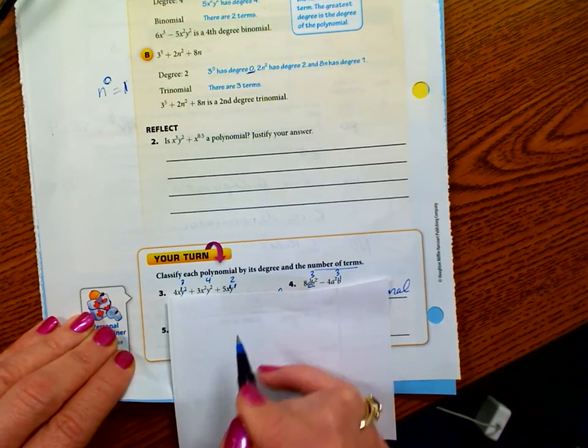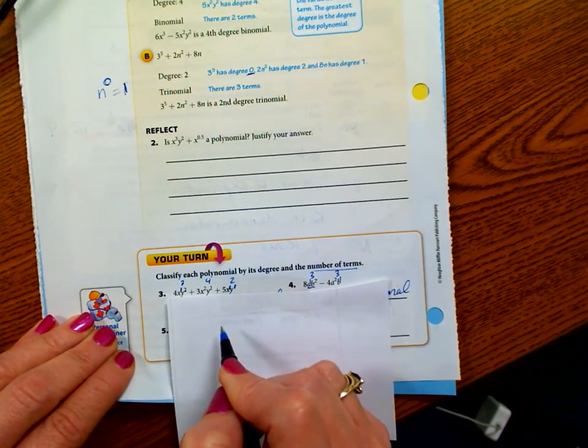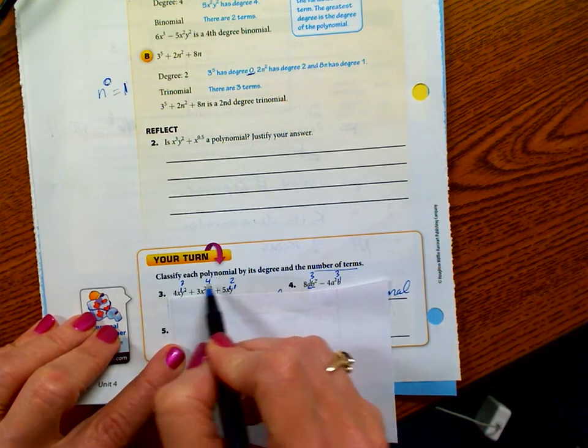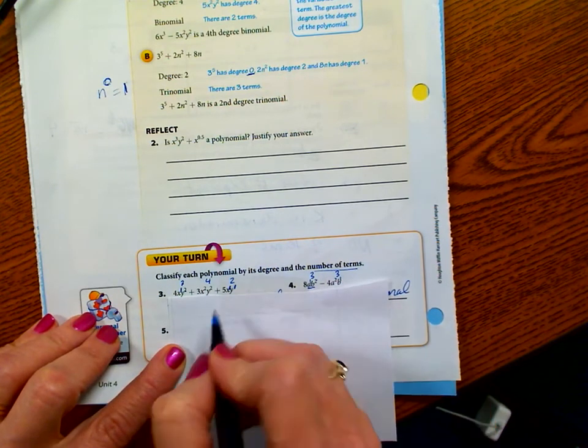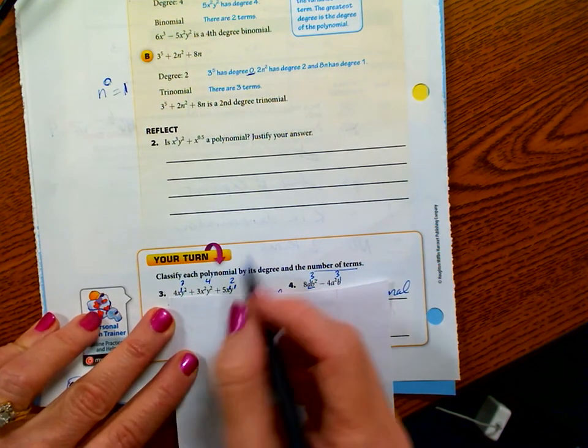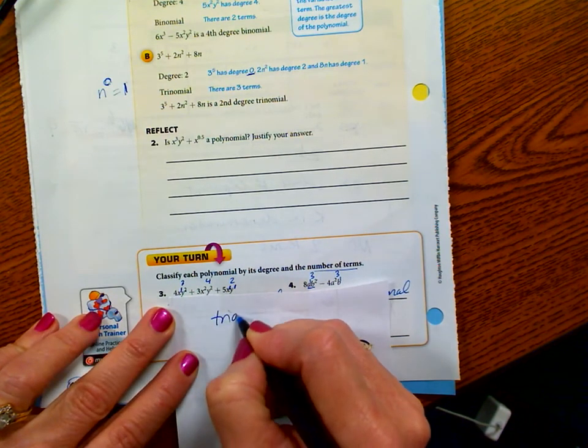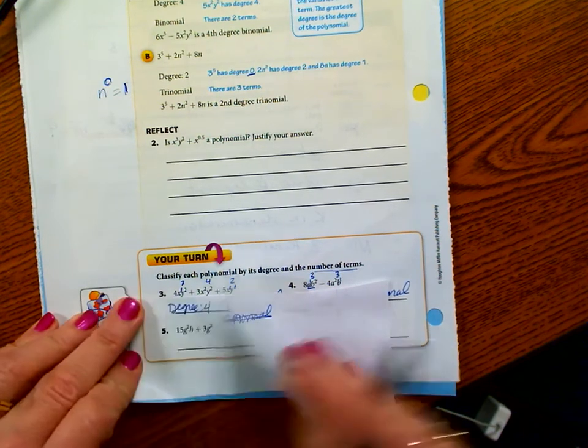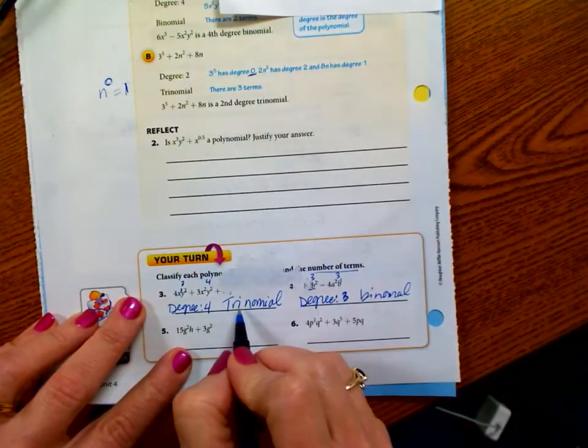Now, I apologize. I had this written on. I filmed, I taped this earlier, and there was no sound, so I have to re-tape it. Re-film it. Okay, so classify each polynomial by degree and number of terms. So how many terms is this? Well, it's a trinomial. So I know it's going to be a trinomial. If I can spell. Whatever. So it's a trinomial.